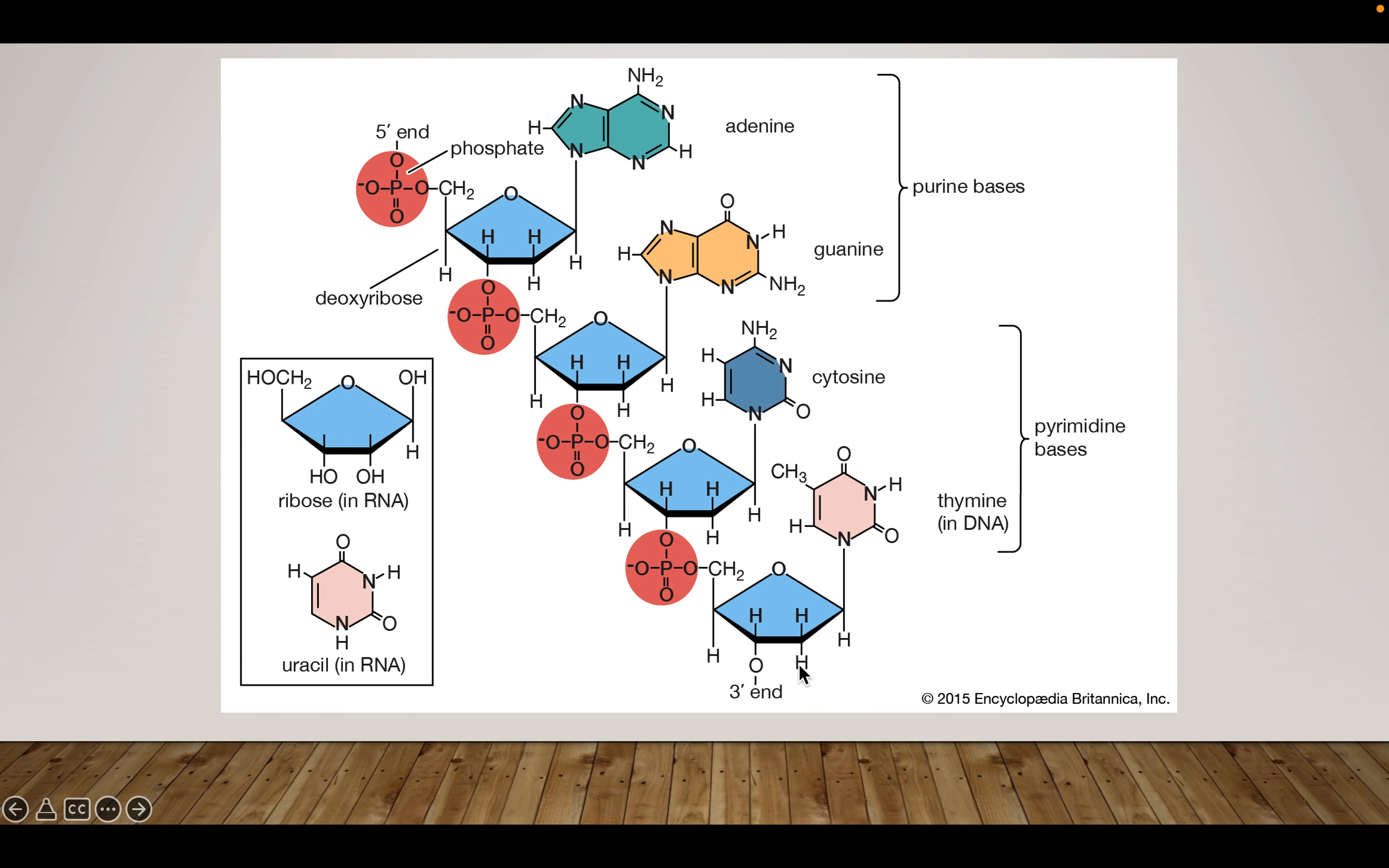And what you note is off of this corner where my mouse is, hopefully you can see it. This is called the one prime carbon, two prime, three prime, four prime, and then this carbon up here is the five prime. Off of this two prime, there's not an oxygen. So if you're lacking in oxygen, you call it deoxyribose.